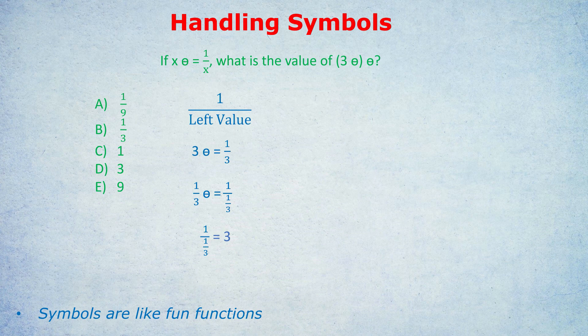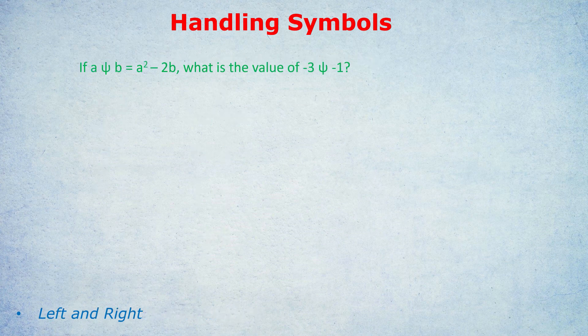I suspect some of you may still be confused about symbols and left value, right value. Let's do another example. If a symbol b equals a squared minus 2b, what is the value of (-3) symbol (-1)? This time, because the symbol is between two values, we have a value to the left, the a, and a value to the right, the b. We have two sets of instructions.